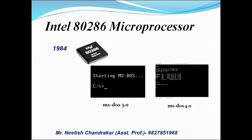सन 1984 में, Intel Micro Processor Intel 80286 के साथ Micro Computer विकसित किया गया। तब इनमें MS-DOS 3.0 और MS-DOS 4.0 शुरू हुए। यहाँ स्क्रीन पर MS-DOS 3.0 और MS-DOS 4.0 दिख रहे हैं — यही MS-DOS की starting है।